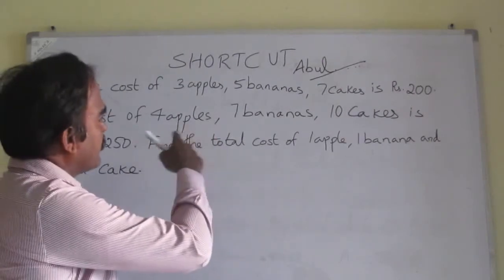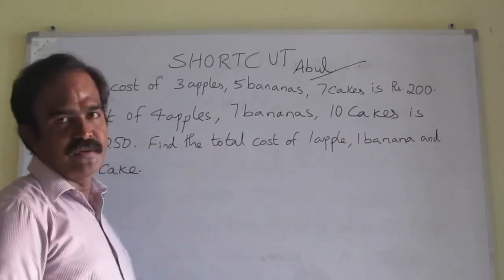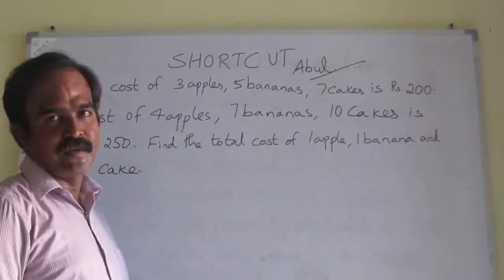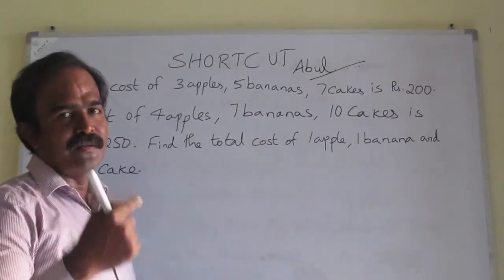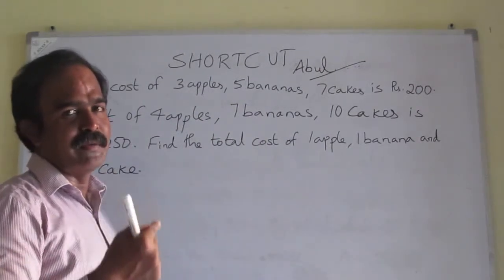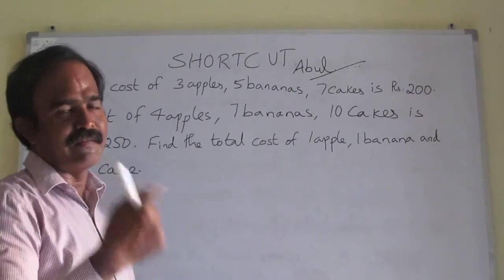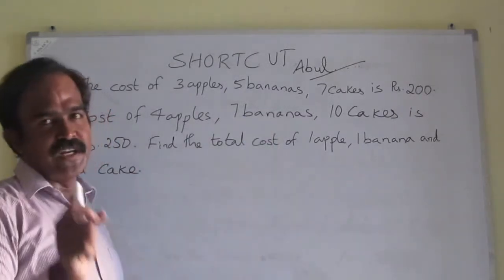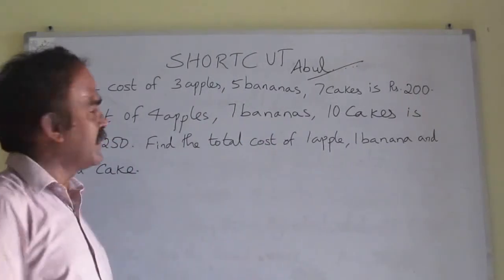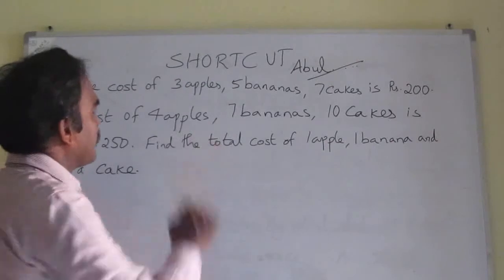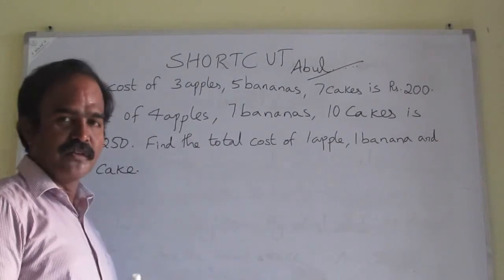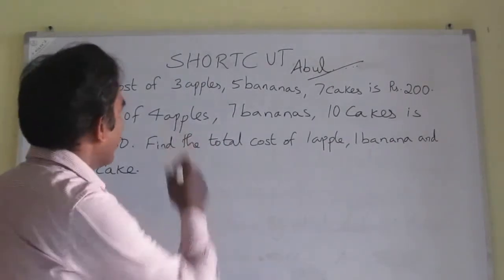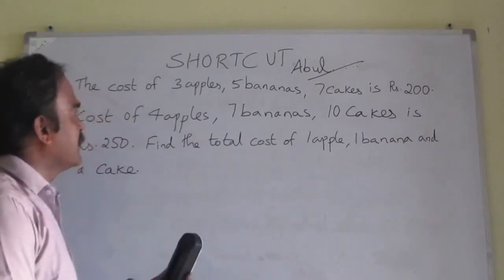Usually once you observe this equation, you may come across that there are 3 unknowns. The immediate thinking which will happen in our mind is: 3 unknowns, we need 3 simultaneous equations. But here, they have given only 2 equations. Is it possible to solve? Yes, possible in few cases. Let us see this question.